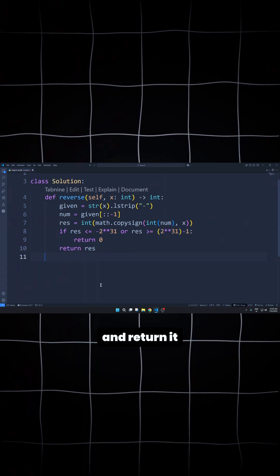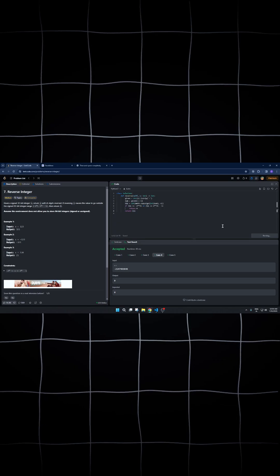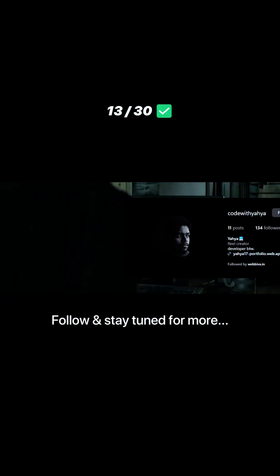After successfully passing all the test cases, we are now ready to submit our code. The time and space complexity of this code is O(n). Okay then, follow and stay tuned for the next one.